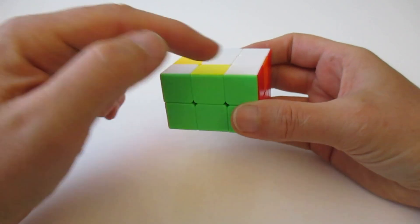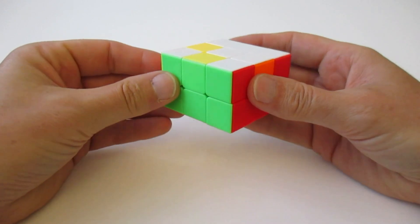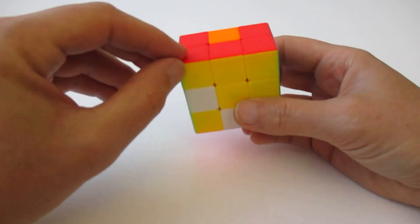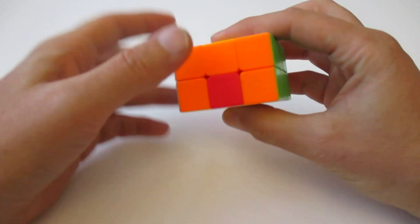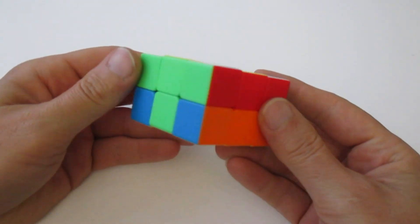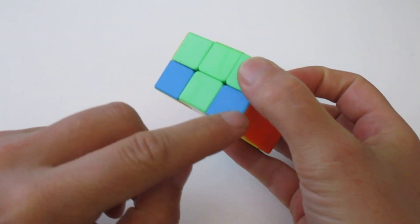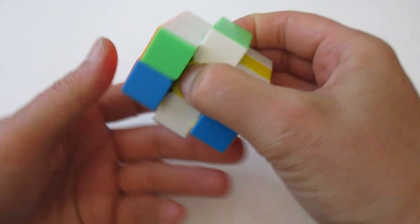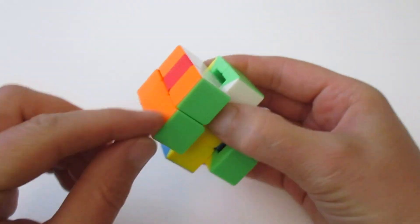And when the white corners are on the correct spots, the yellow corners also are on the correct spots. The only thing that can happen is that you need to rotate the down face to align them.